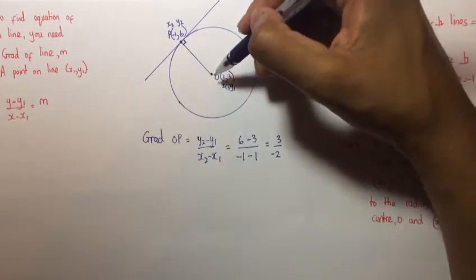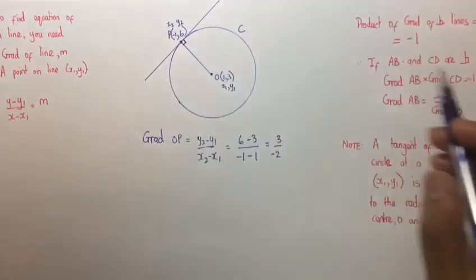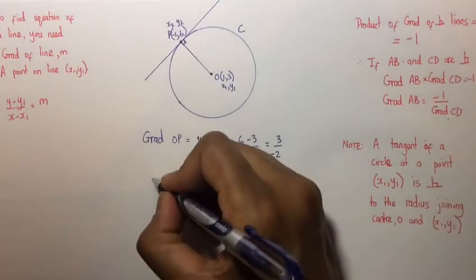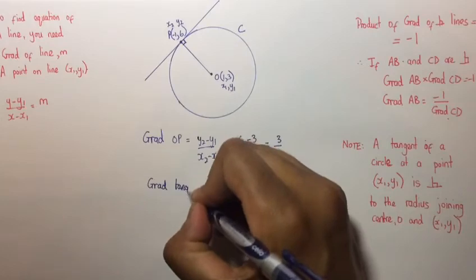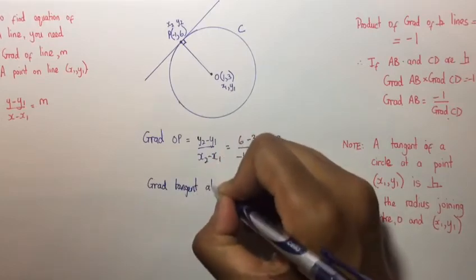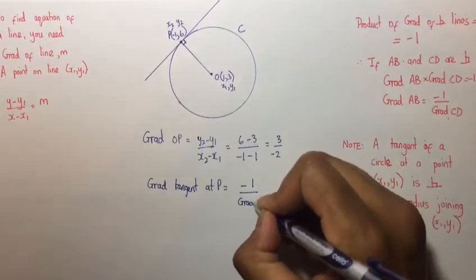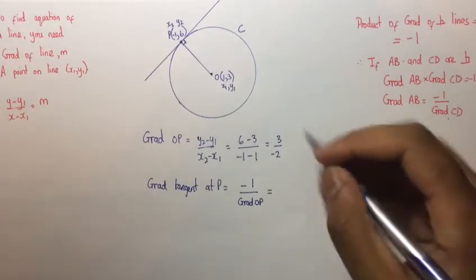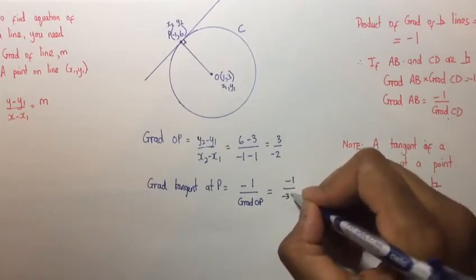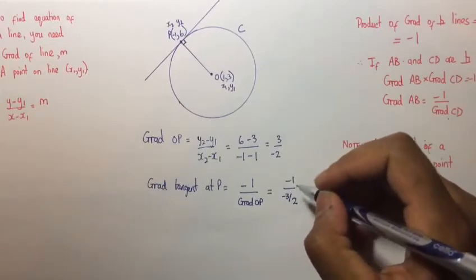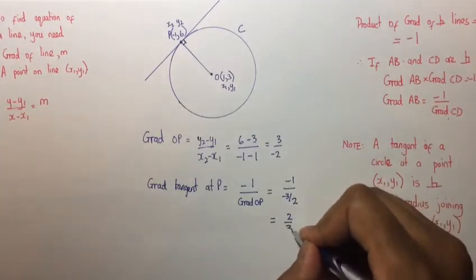That is equal to 3 over minus 2. So that's the gradient of OP. Now we know that the gradient of OP times the gradient of the tangent equals minus 1. Therefore, the gradient of the tangent at P is equal to minus 1 divided by the gradient of OP, which equals minus 1 divided by minus 3 over 2, giving us the gradient as 2 over 3.